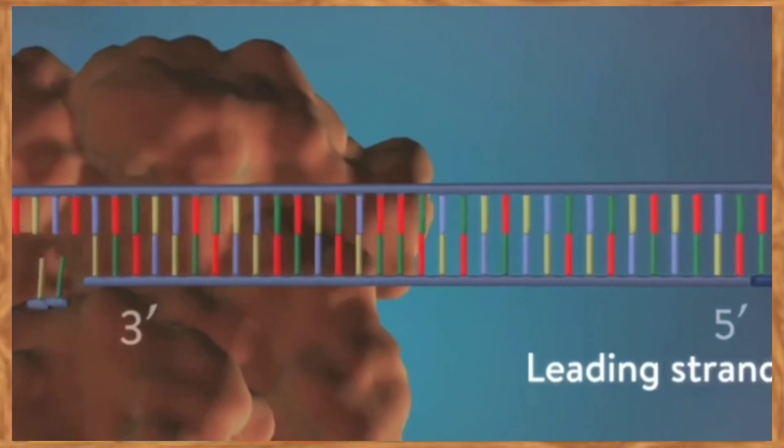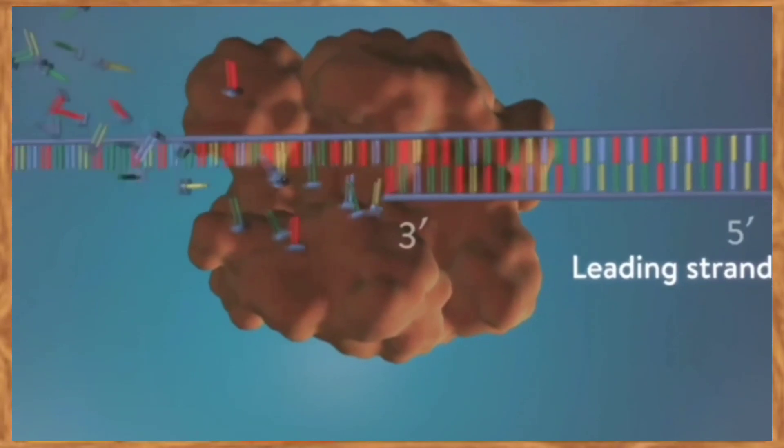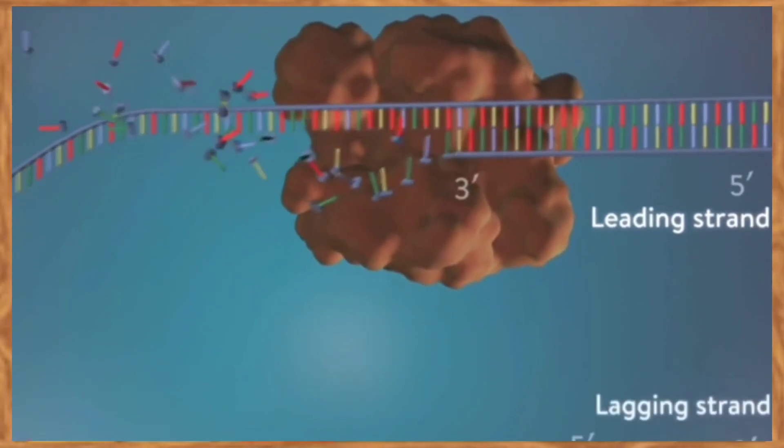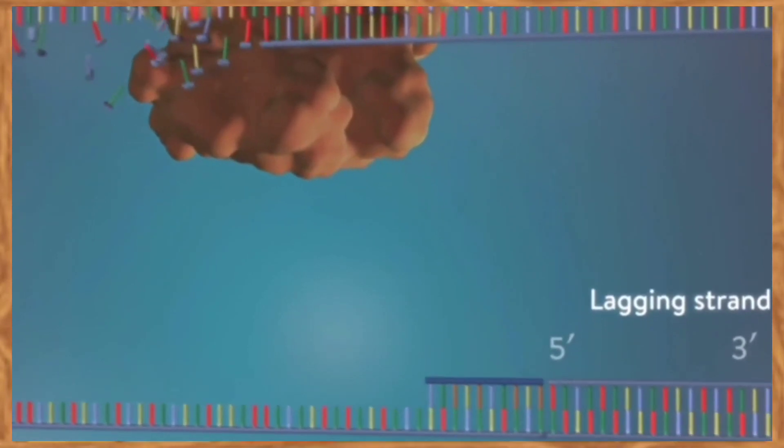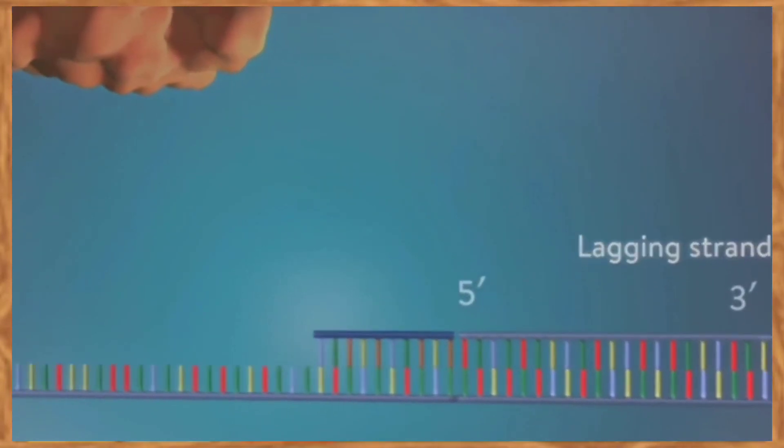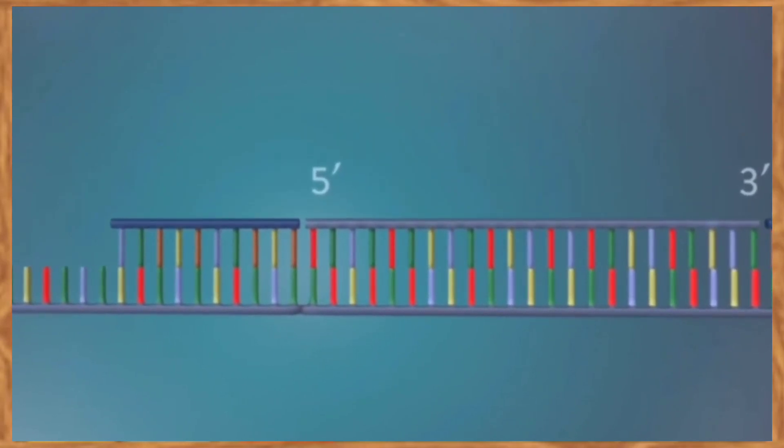The other strand, the lagging strand, cannot be made in this continuous way because it runs in the opposite direction. The DNA polymerase can therefore make the strand in a series of small chunks called Okazaki fragments. Each fragment is started with an RNA primer.